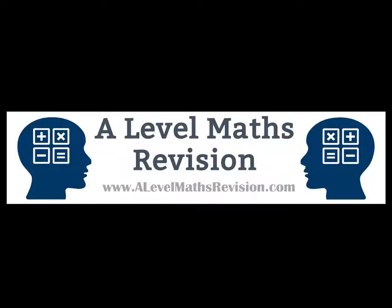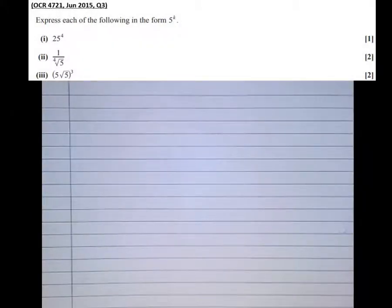This tutorial video is on the topic of indices and specifically writing a power of one number as a power of a different number. This question here says express each of the following in the form 5 to the power of k. So we need to take these numbers and make them power of 5.